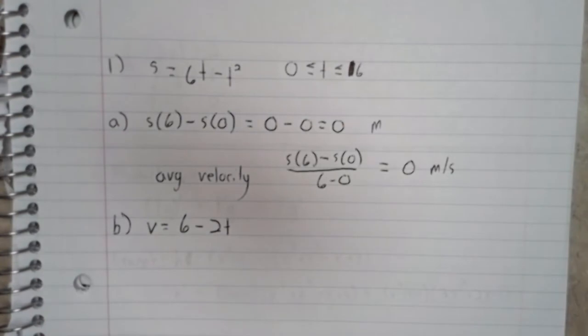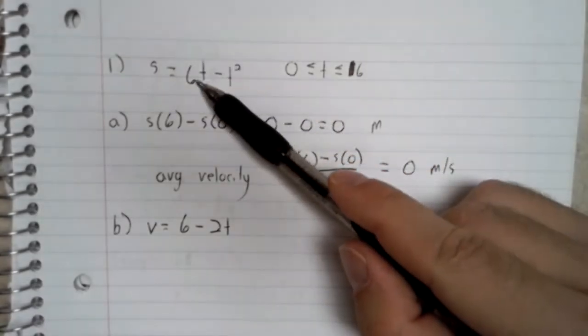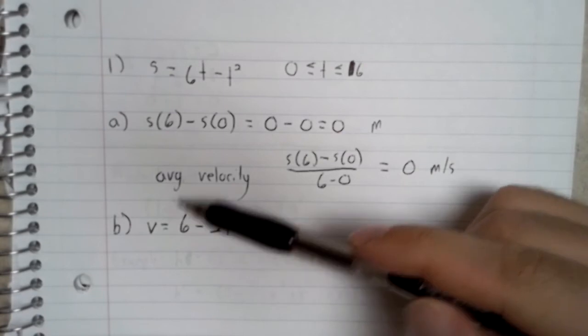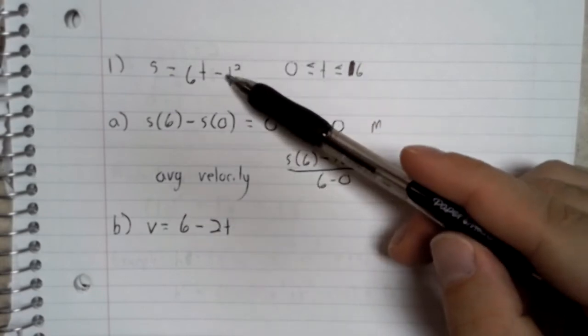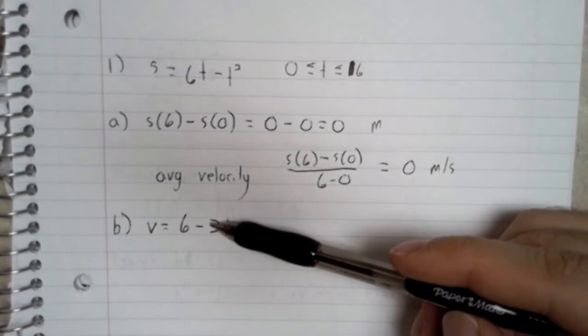So whether the problem uses the word or not, we do need to find the velocity function. v of t, the derivative of 6t is 6. Here, we use the power rule, t squared to 2t.